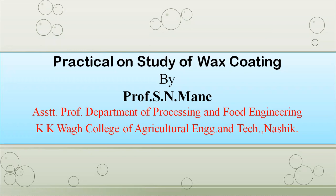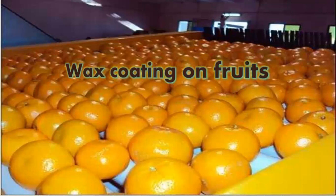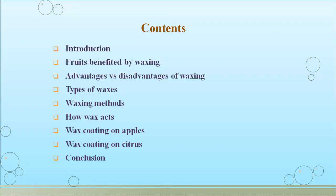Today we will learn about a practical on the study of wax coating — wax coating in case of fruits as well as vegetables. In the content we will see: introduction, fruits benefited by waxing, the different advantages and disadvantages of waxing, different types of waxes, methods used for waxing, the actual working principle behind waxing, wax coating on apples as well as citrus, and finally the conclusion of this process.